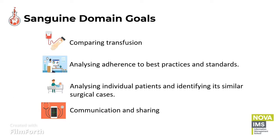To tackle this problem, a group of different specialists from the University of Utah Hospital developed Sanguine, an open-source interactive visual analytical tool that analyzes blood product usage in a patient information context, with the primary goal of identifying problematic transfusion practices.